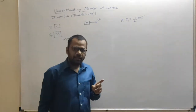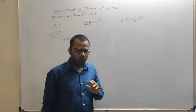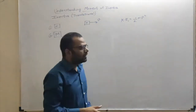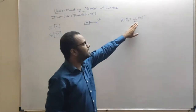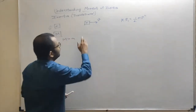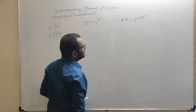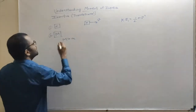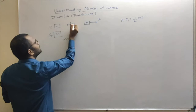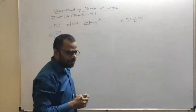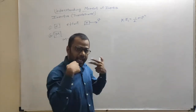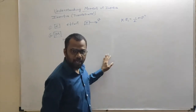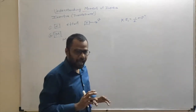We know that energy cannot be created or destroyed. The body was initially at rest with zero kinetic energy; now it has kinetic energy of half m v squared. That energy came from the effort I put in — I spent some energy, and the body gained that energy. I lost some energy and the body gained that energy.